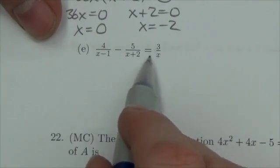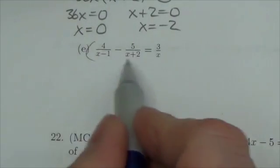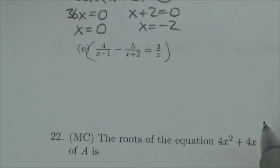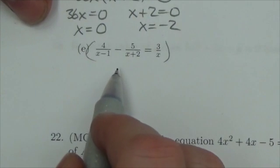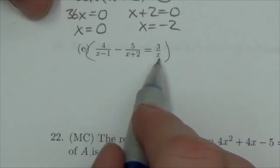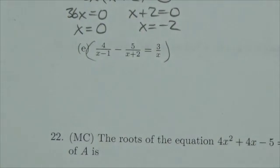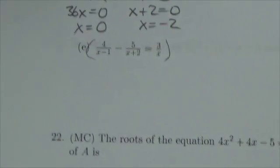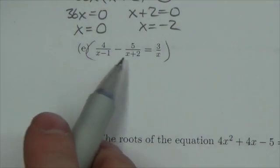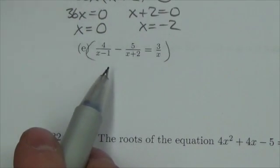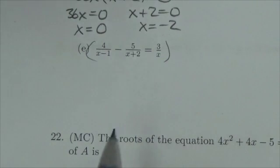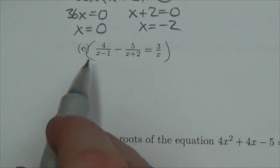I've got x minus 1 in the denominator, x plus 2 in the denominator, and x in the denominator. I know the temptation is to think that x is common, but that's a misuse of that word. Yes, it shows up in all three, but when we say common we mean common factor.